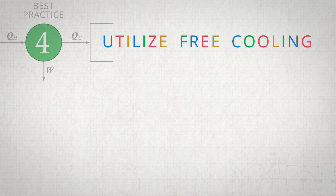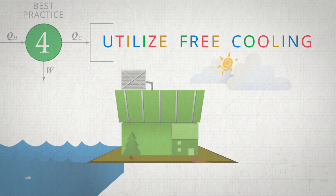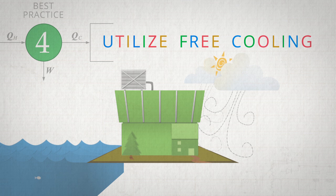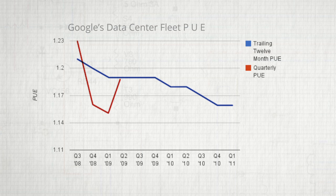Whenever possible, we recommend people to free cool. Free cool means utilizing ambient temperatures outside of your data center to be able to provide cooling without operating very heavy energy consuming equipment like chillers. We use free cooling at all of our data centers. And you can see this in our publicly reported PUE data, where the PUE values go up in the summertime and down in the wintertime. This is just a reality of running our operations with free cooling, and it yields tremendous efficiency gains.